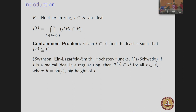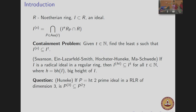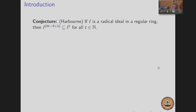With this, Huneke asked: can you refine this in some good cases? For example, if P is a height-2 prime ideal in a regular local ring of dimension 3, the earlier theorem says P^{(4)} is contained in P^2, but he asked whether P^{(3)} is contained in P^2. This question is wide open — it's a couple of decades old problem, known in only very few cases.